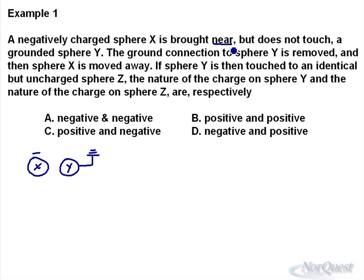So if you bring a negative charge near to it, what will happen is through the process that likes repel, this should drive electrons out of sphere Y. So what will happen is, if it drives those electrons out,